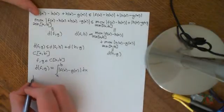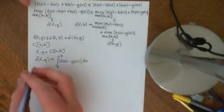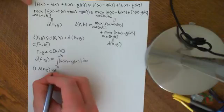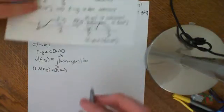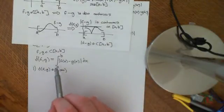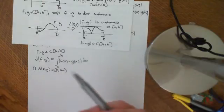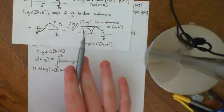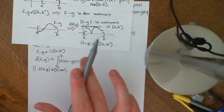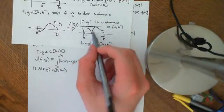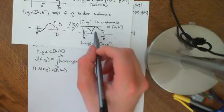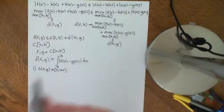That's the first thing we need to check to make sure it's a metric space — that the distance between F and G is an element of the non-negative real numbers. In this definition, we are thinking of the integration in the Riemann sense, not necessarily in the Lebesgue sense. The integral over [a,b] is going to be defined because |F(x) − G(x)| is a continuous function, and therefore its Riemann integral will be defined.